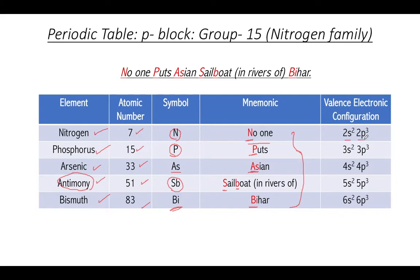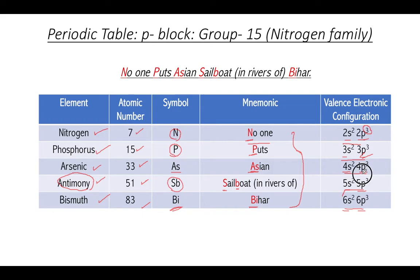The valence electron configurations for Group 15: 2s²2p³ for nitrogen, 3s²3p³ for phosphorus, 4s²4p³ for arsenic, 5s²5p³ for antimony, and 6s²6p³ for bismuth. All last electrons enter the p subshell — that's why they are classified as p-block elements. With 2 + 3 = 5 valence electrons, all nitrogen family elements share the same valence electron count, giving them similar physical and chemical properties, which is why they are placed in the same group.